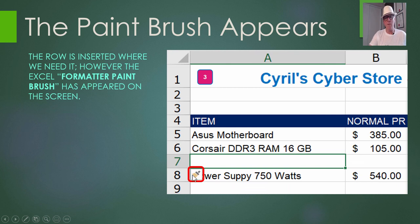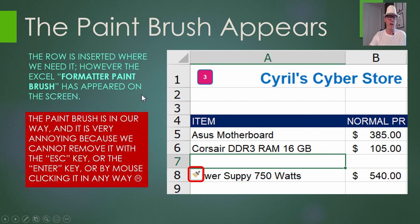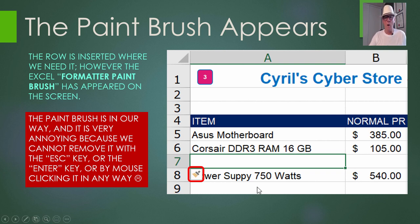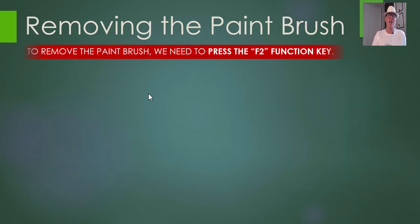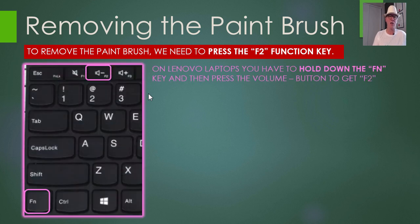Now the annoying paintbrush appears — what's that all about? It stays in the way of where you might want to type in cells, so it can be very annoying and we need to remove it. If you try the usual things like the Escape key, the Enter key, clicking away on another cell, or clicking on other things — nothing seems to make it go away. That's why it's like the annoying orange: it's the Excel annoying paintbrush.